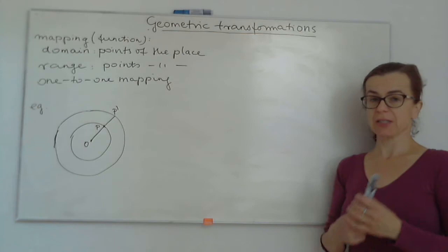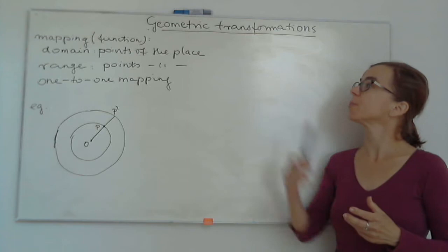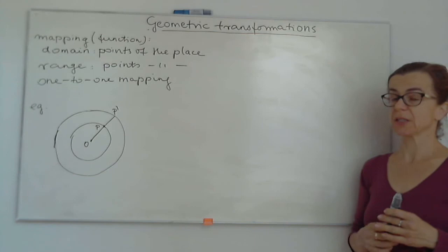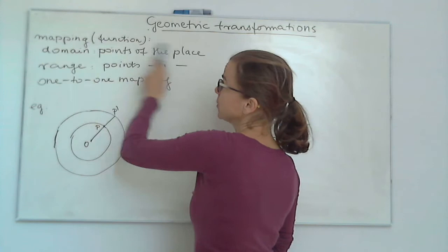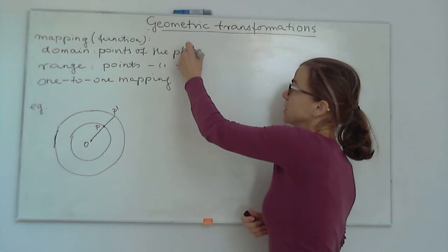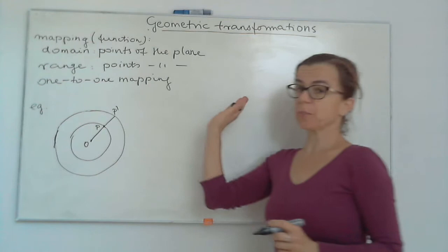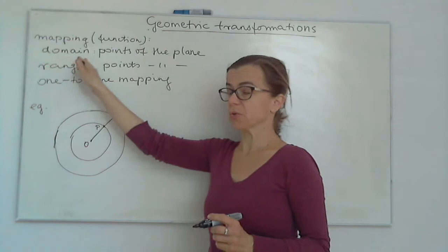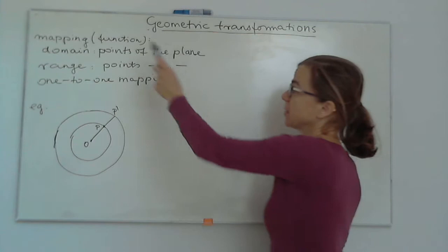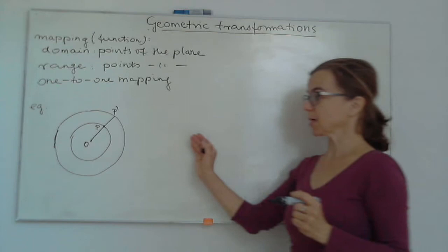The new topic is geometric transformations, and this year we are going to talk about a special subtype called isometries, or congruent transformations. But let's first talk about geometric transformations in general. They are mappings — they map points of the plane to points of the plane. The domain is points, the range is also points, and an important property is that they are one-to-one mappings, which is why we can consider them as functions.